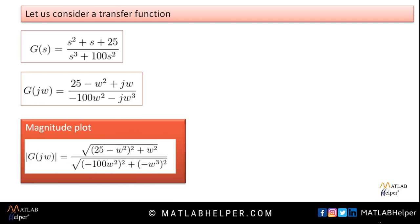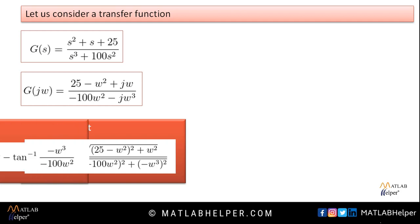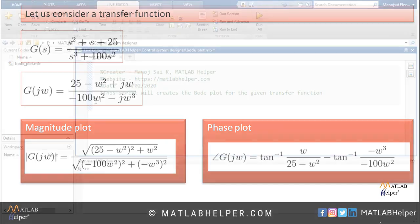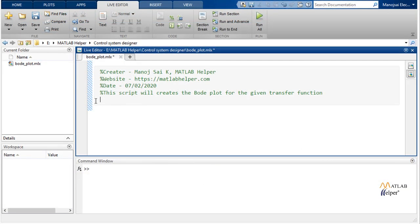Replace s with jω and take the absolute value — it will give the magnitude plot. By taking the angle of g(jω), it will give the phase plot. Now we will implement this Bode plot in MATLAB.